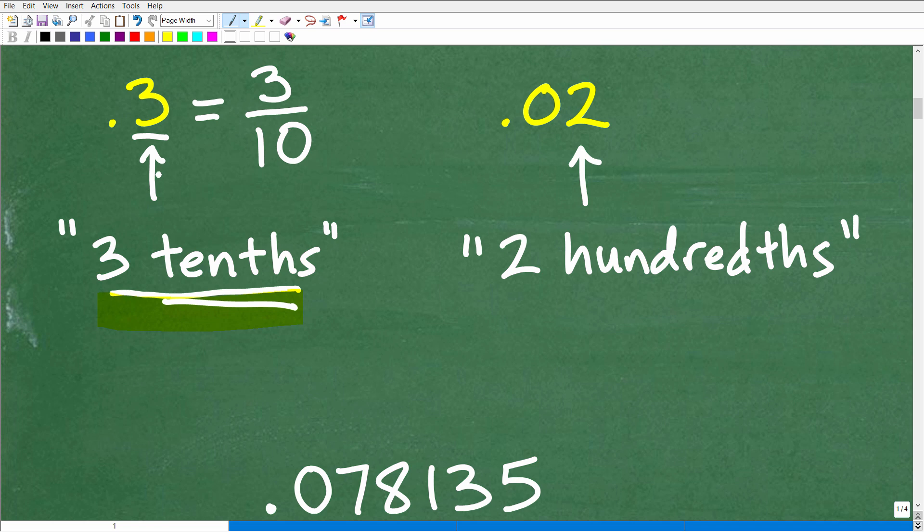Okay, so how do you convert a decimal to a fraction? Well, we need to kind of state that decimal using place value. So let's take a look at another example here. So here we have 0.02.